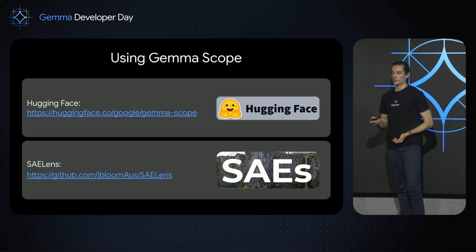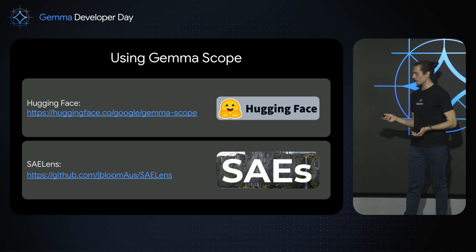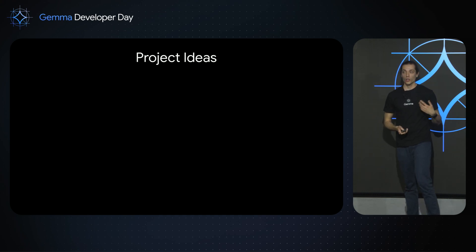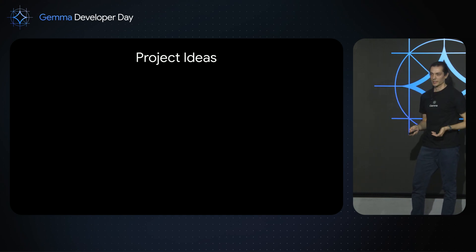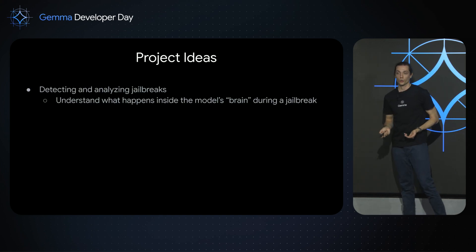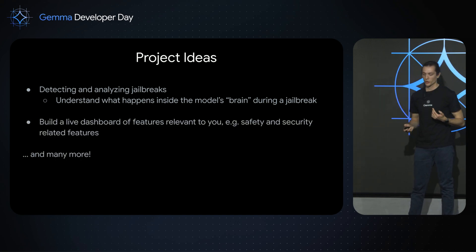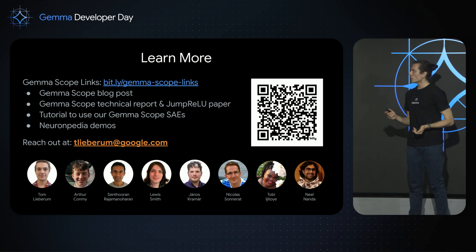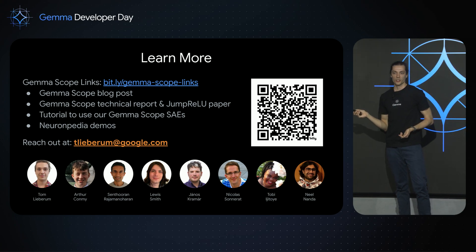Finally, if you'd like to use GemmaScope in a more open-ended way, you can find all of the SAEs on Hugging Face or interact with them via the SAE Lens library, which provides a nice wrapper around them. One of our hopes is that we can enable lots of research and projects by the community — for example, using sparse autoencoders to detect and analyze jailbreaks, or building an interactive dashboard for monitoring and intervention on the model. Please check out the link or scan the QR code to access all of the demos. Thank you so much.